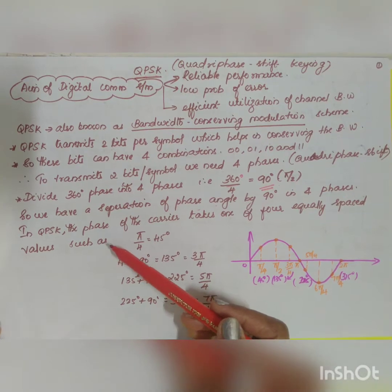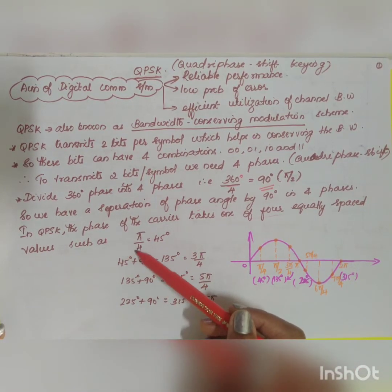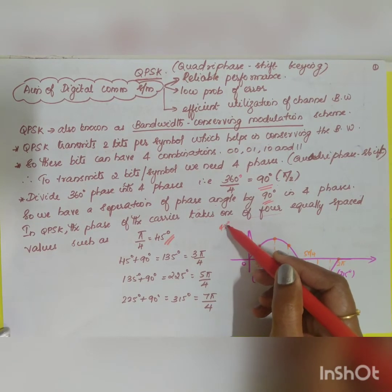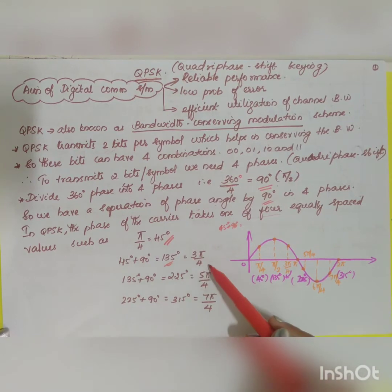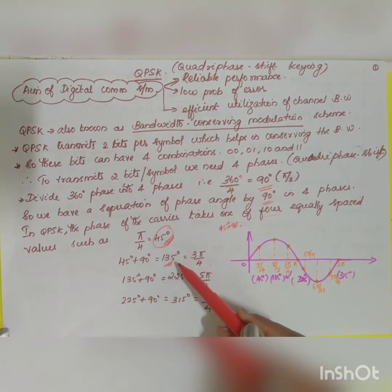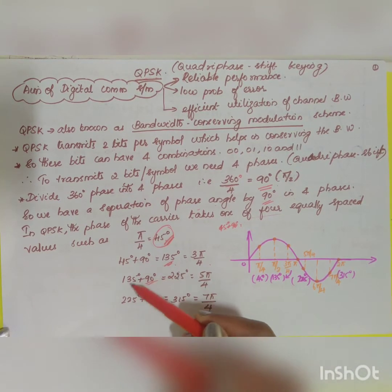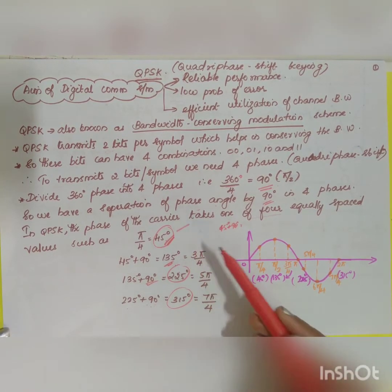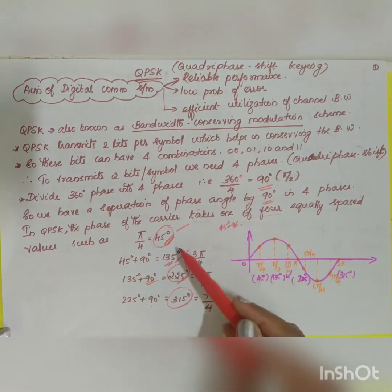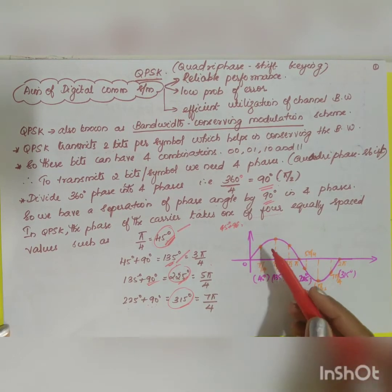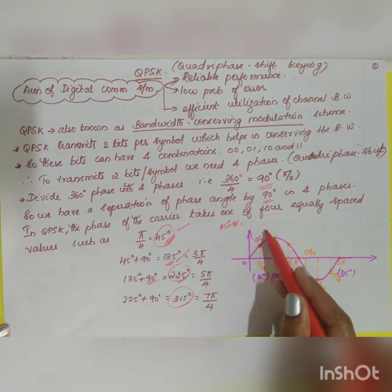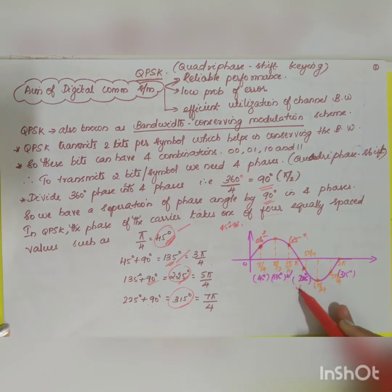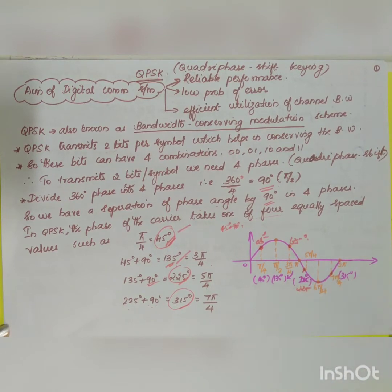In QPSK, the phase of the carrier takes one of four equally spaced values with a spacing of 90 degrees. The first angle is 45 degrees, the second is 45 + 90 = 135 degrees (or 3π/4), then 135 + 90 = 225 degrees, and 225 + 90 = 315 degrees. So the four different phases are 45°, 135°, 225°, and 315°.